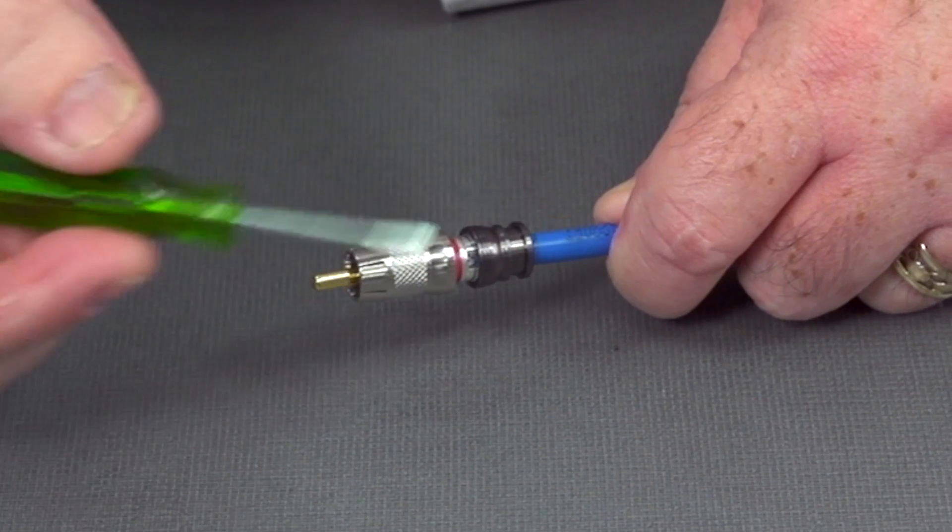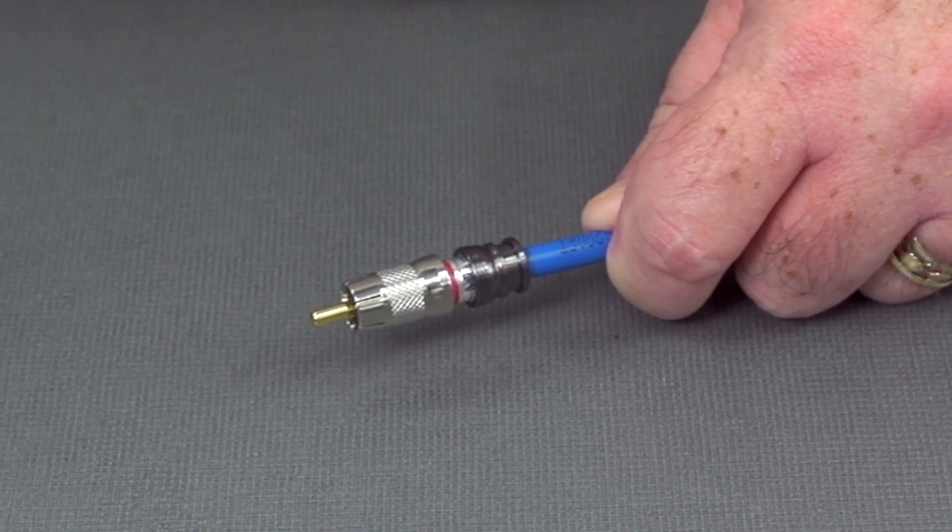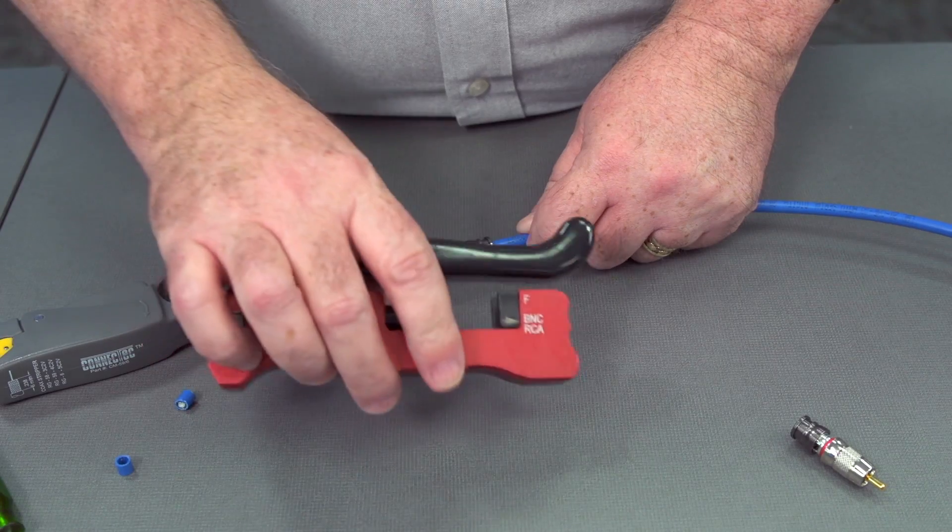Let's look at our inspection hole. We can see that we can see the braided shield. So we pushed it in far enough. Now the next step is to use our tool.